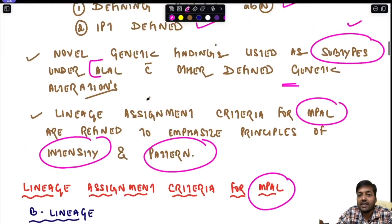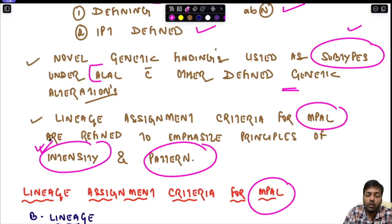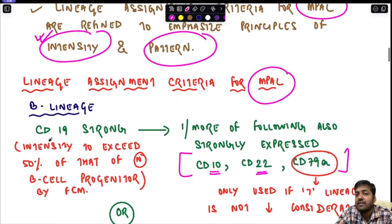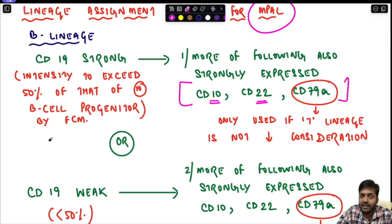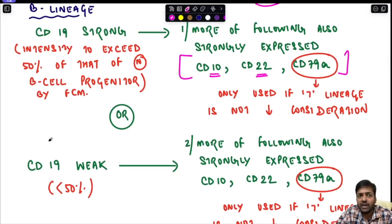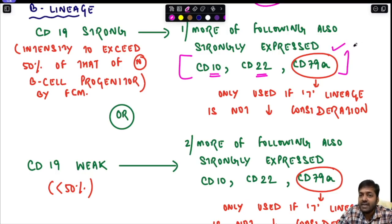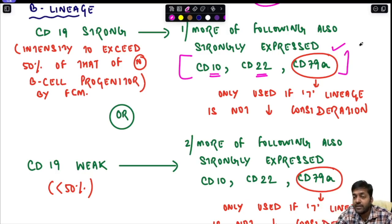"Strongly expressed" here refers to intensity: CD19 intensity must exceed 50% of that of the normal B cell progenitor by flow cytometry. If CD19 expression is strong, one or more of CD10, CD22, or CD79a must also be strongly expressed. Importantly, CD79a should only be used if T lineage is not under consideration.